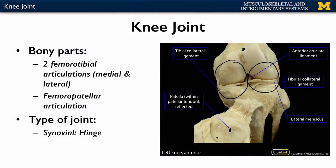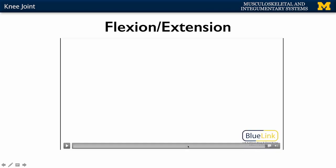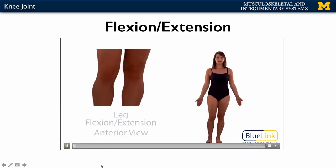What type of joint is this? We call this a complex or modified hinge joint. Think about what actions can occur at a hinge joint — only flexion and extension can occur here. Let's talk about flexion and extension in the knee joint because it's slightly different than other joints in the body.